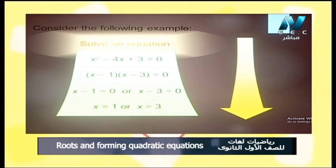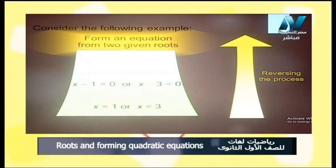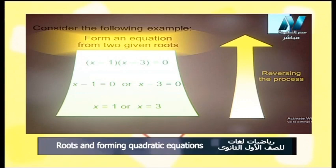Look carefully, my dear students. We have the roots x equals 1 or x equals 3. We reverse the process: x minus 1 equals 0 or x minus 3 equals 0. We multiply the two brackets — x minus 1 multiplied by x minus 3 — and so we form this equation again.